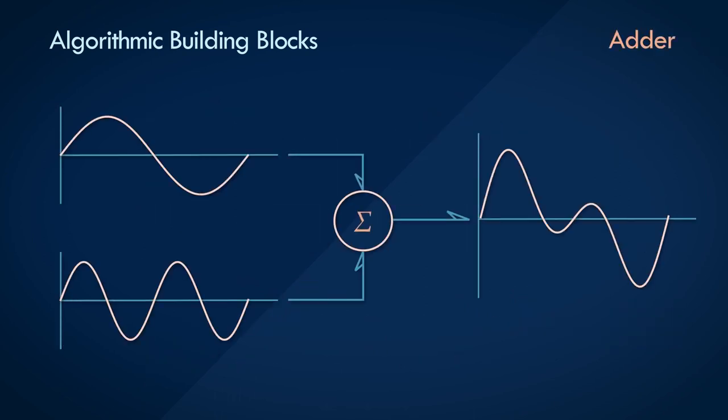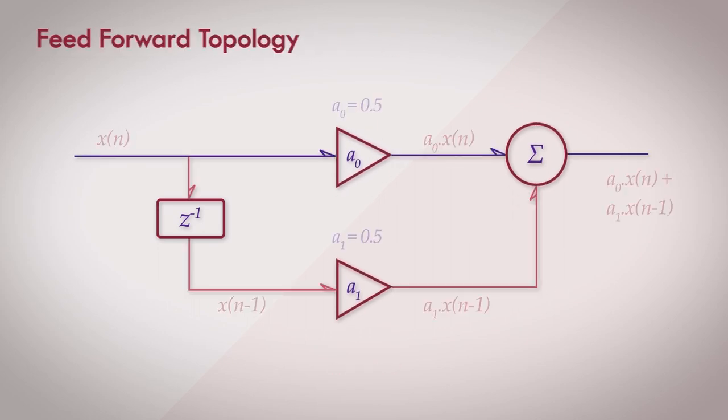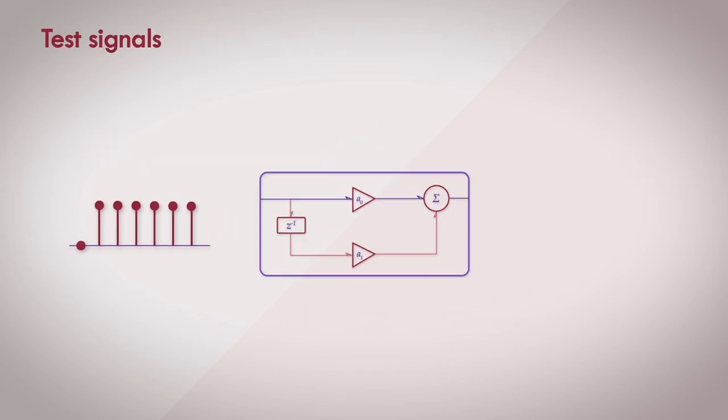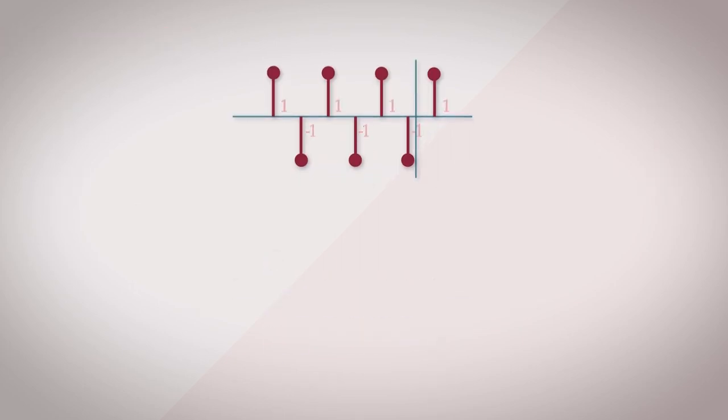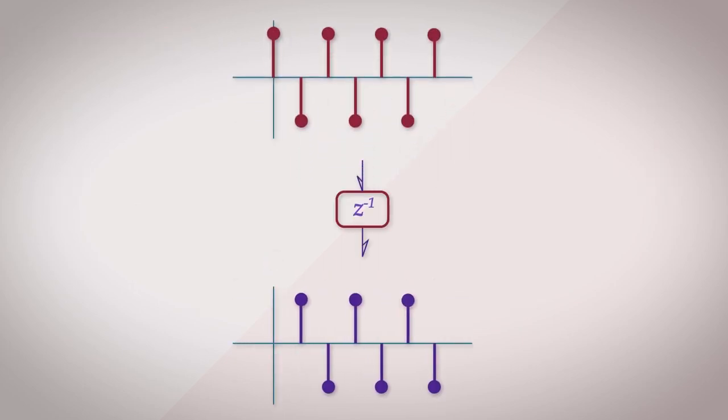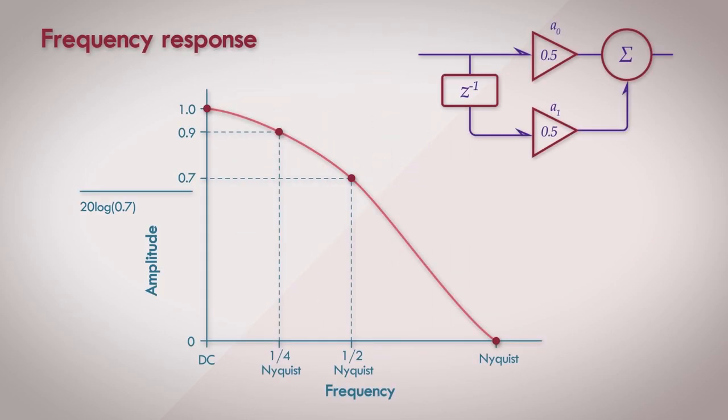We'll look at the simplest filter topology, a first order feed forward low pass filter. We'll run the test signals through this theoretical filter, going over the signal step by step, sample by sample, to see how the filter processes the test signal. Through this, we'll discover the fundamental principle on how a filter attenuates or boosts certain frequencies in a signal.